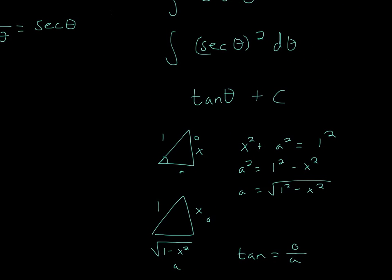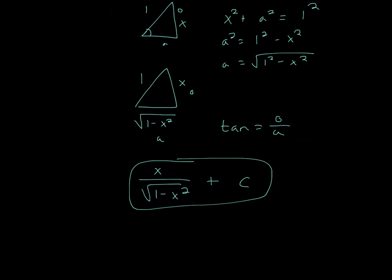So here, the opposite is x, and the hypotenuse will be 1. Now, since we have two of the sides, we can do Pythagorean theorem to get the adjacent side. And the adjacent side, we find, is square root of 1 squared minus x squared.